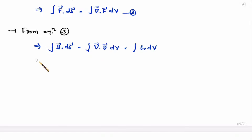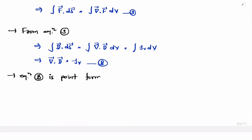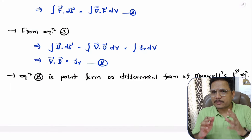If you observe this equation, the volume integration can get cancelled from both sides. So, one can say del dot D equals rho V. And this is the differential form of Maxwell's first equation, or one can say this is the point form of Maxwell's first equation.